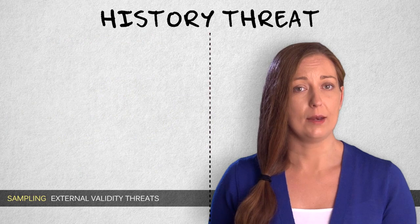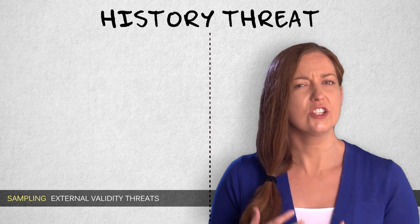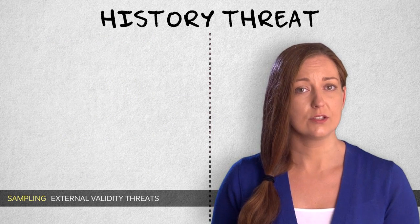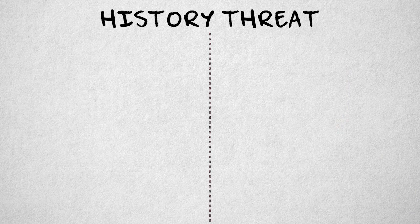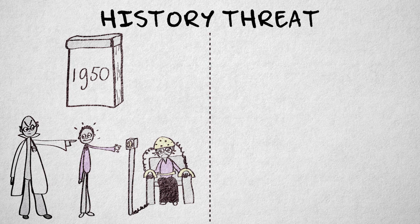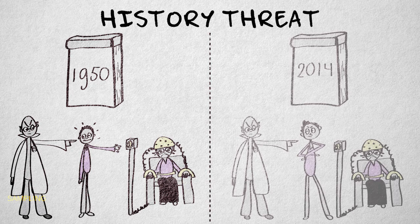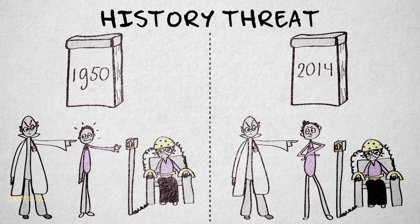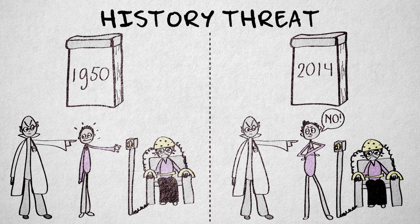A history threat means that the observed effect doesn't generalize to other time periods. Consider a compliance study performed in the 1950s in the U.S. Results showed that participants were willing to comply with highly unethical directions provided by an authoritarian experimenter. These results would probably be less extreme if we repeated the study nowadays, for example because people are more highly educated and less sensitive to authority than in the 1950s.